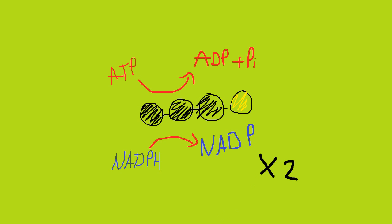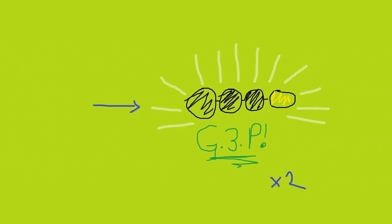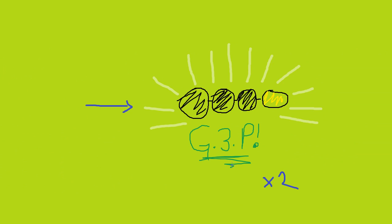Now, the product of this reaction, this stage, is this molecule, G3P, which is glyceraldehyde-3-phosphate, or triose phosphate. This again is produced twice.